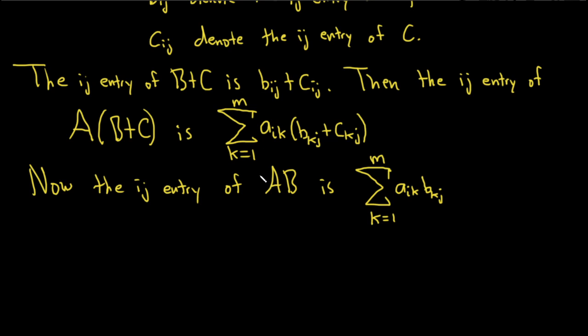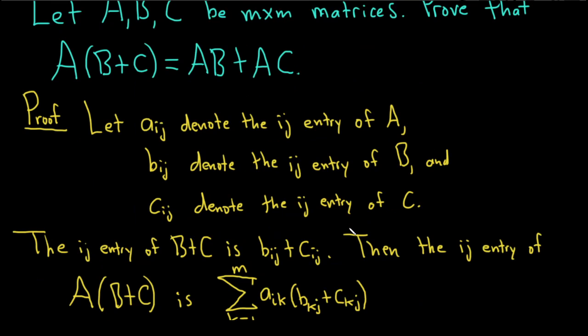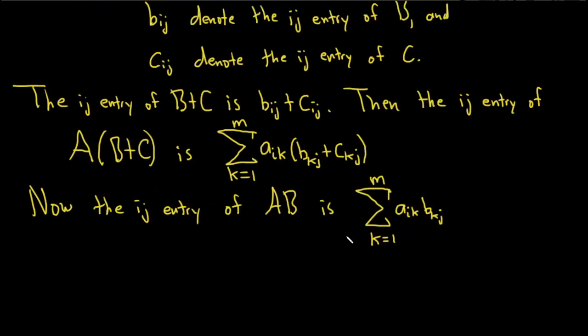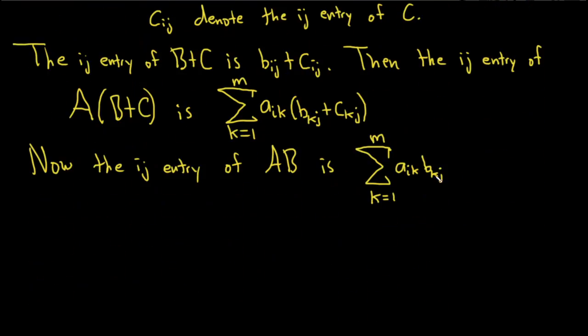We also need to look at the ij entry of AC. Because we have AB plus AC. So let's look at that.